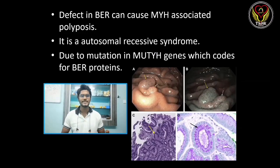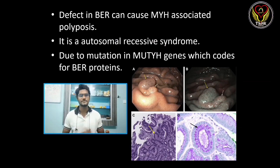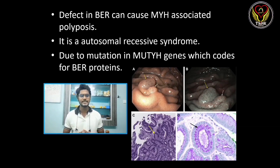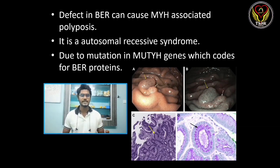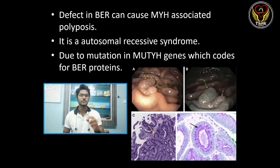Now, if you have a defect in the base excision repair mechanism, you have MUTYH-associated polyposis. This is an autosomal recessive syndrome. If you have a defect in the MUTYH gene, you have a defect in the base excision repair, resulting in a defect in DNA repair.